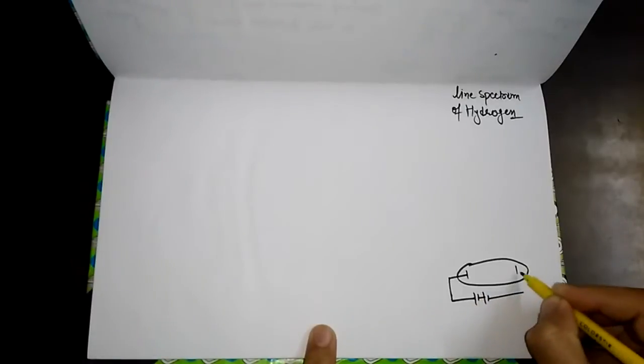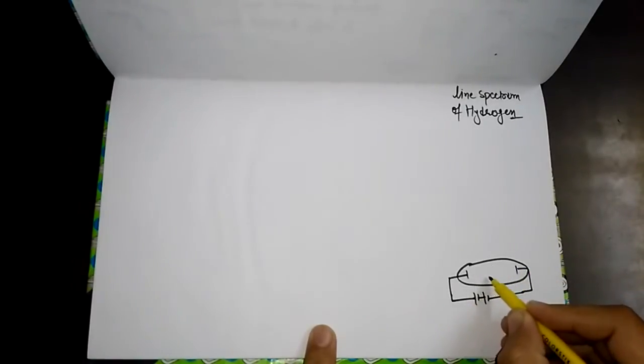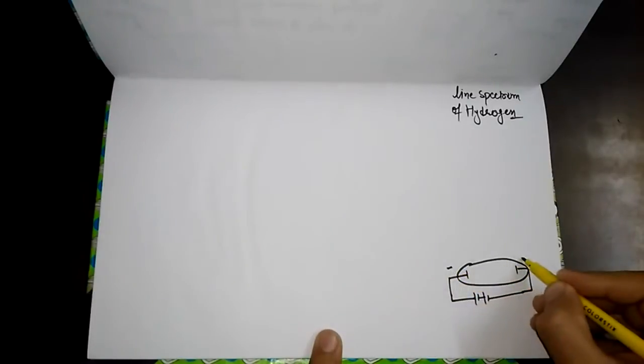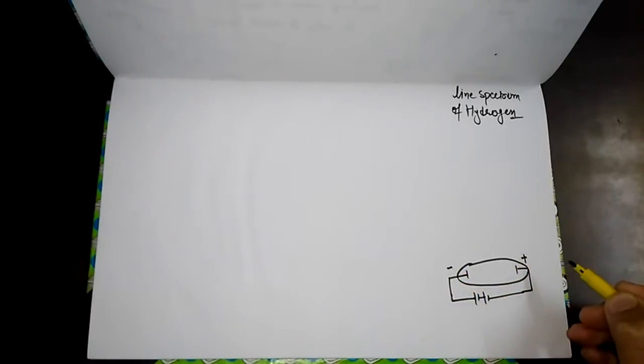Hello friends, welcome to our channel. Today we are going to discuss the line spectrum of hydrogen under the topic 'Structure of Atom'. Remember that if the pressure inside the discharge tube — which has cathode and anode electrodes attached with a high voltage battery — is higher, then there will be no flow of current from cathode to anode side.